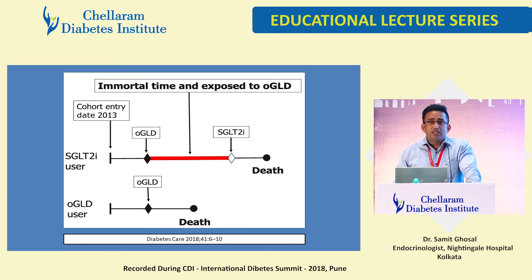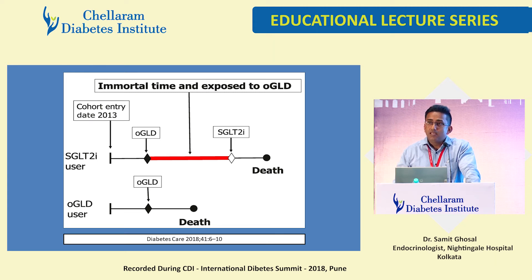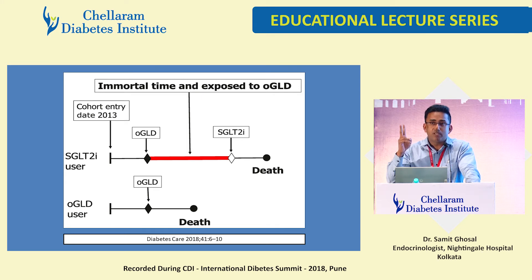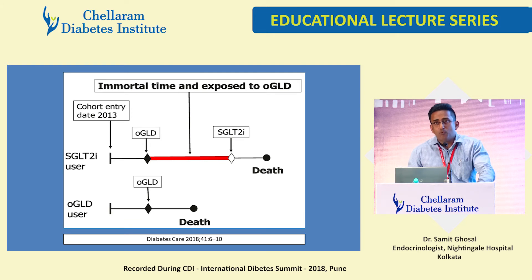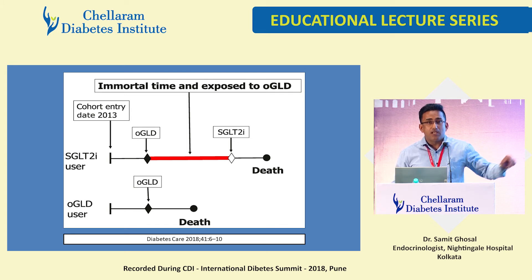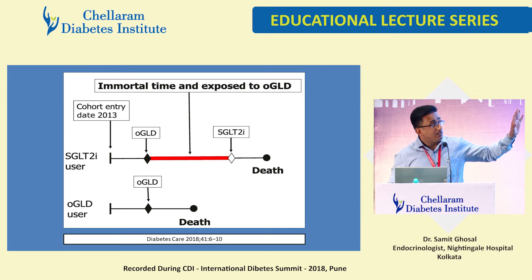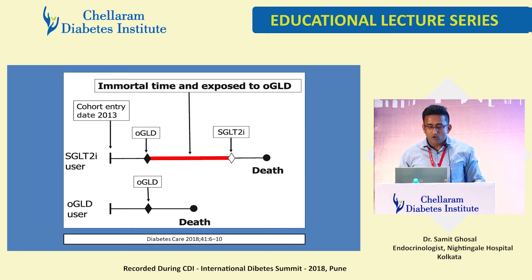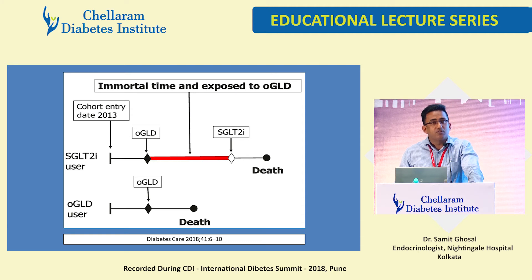When choosing an SGLT2 inhibitor for patients without established cardiovascular disease, the first question is: is the drug safe? The second: is it beneficial? For the safety analysis of canagliflozin in the pooled phase 2 and phase 3 data, the events analyzed were 71 and 130 total. But only 22 of those 130 events came from the pooled Phase 2/Phase 3 trial.